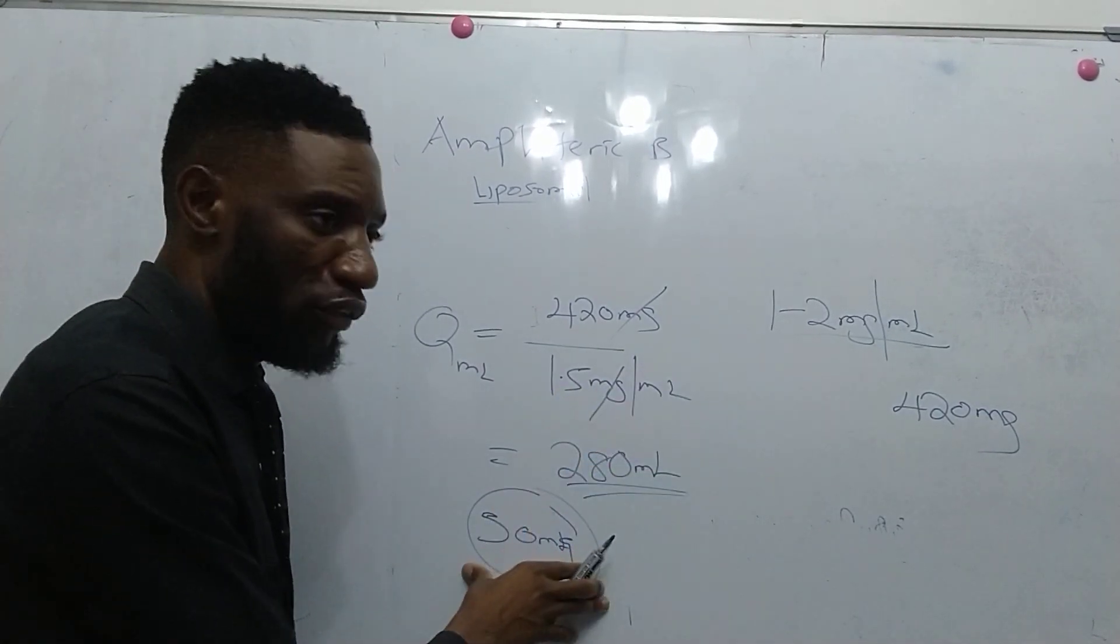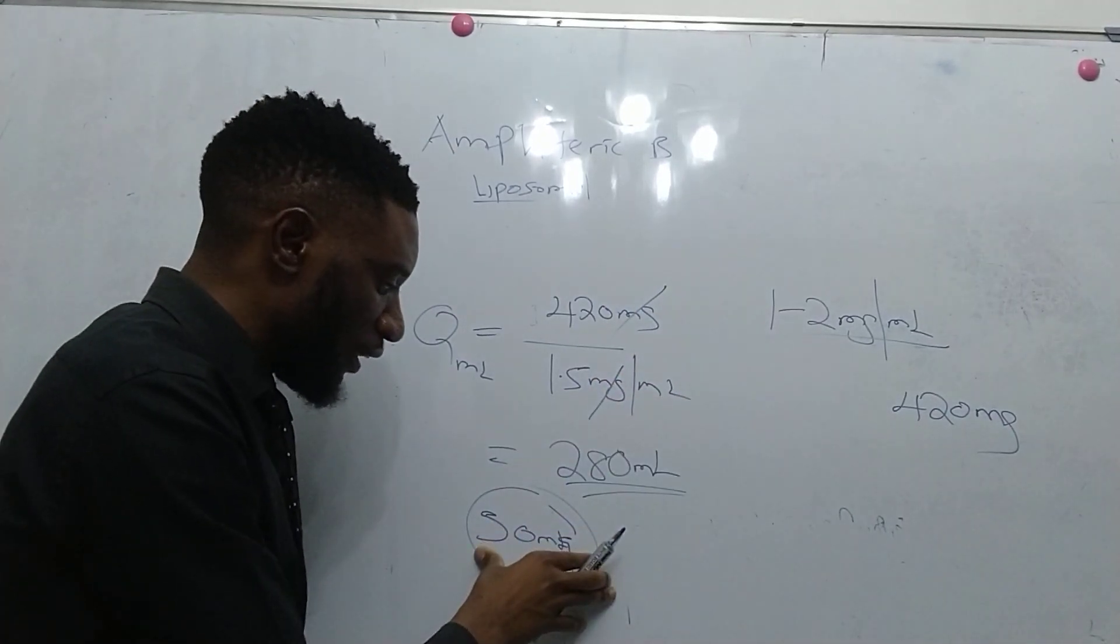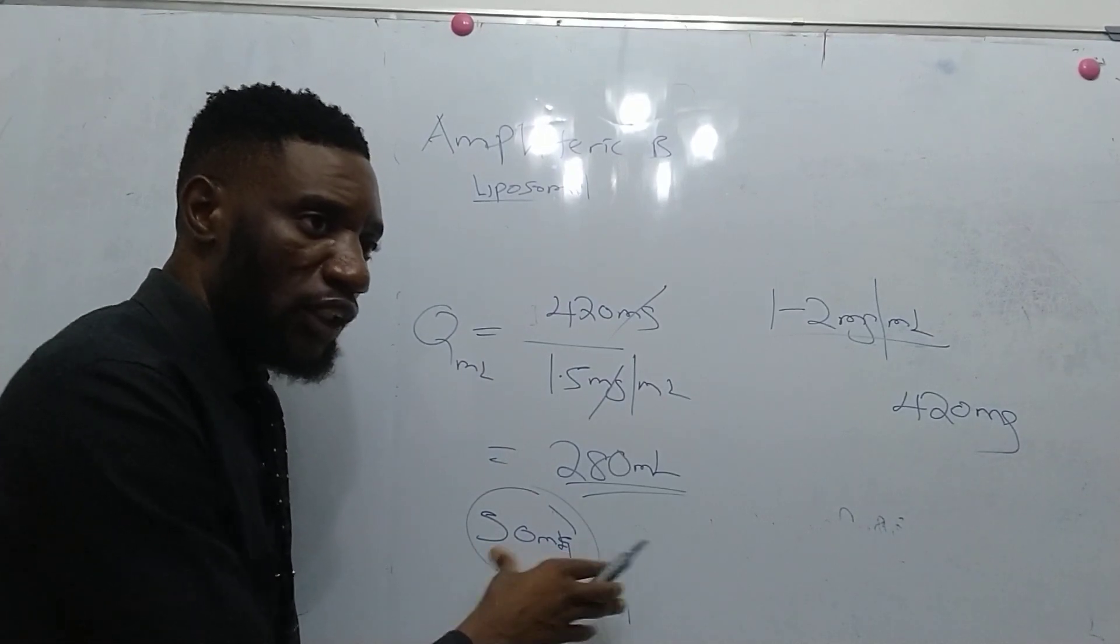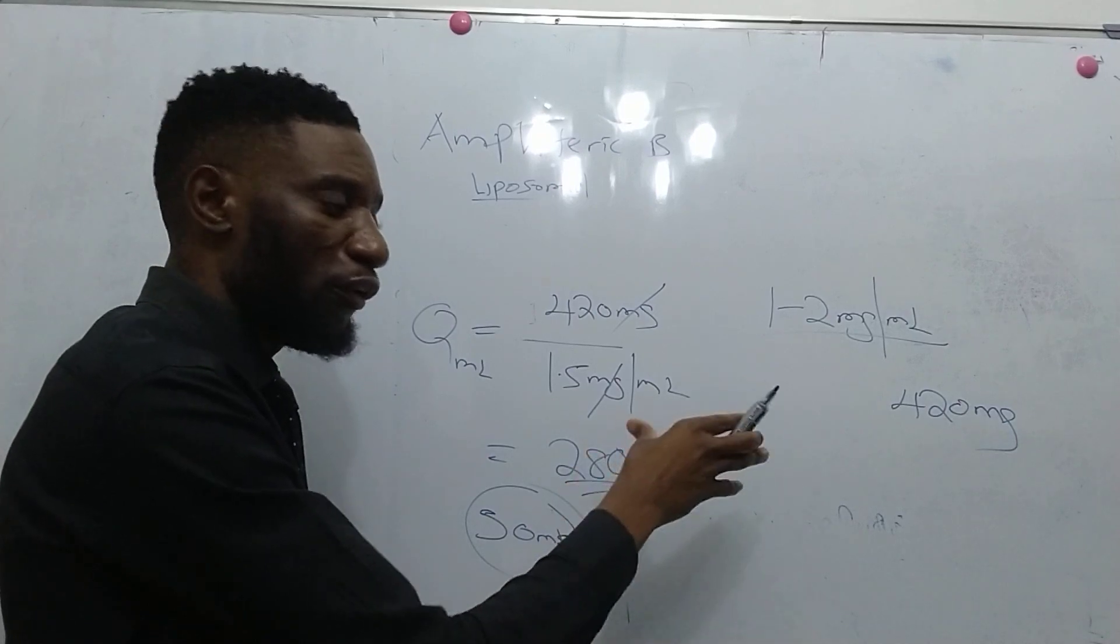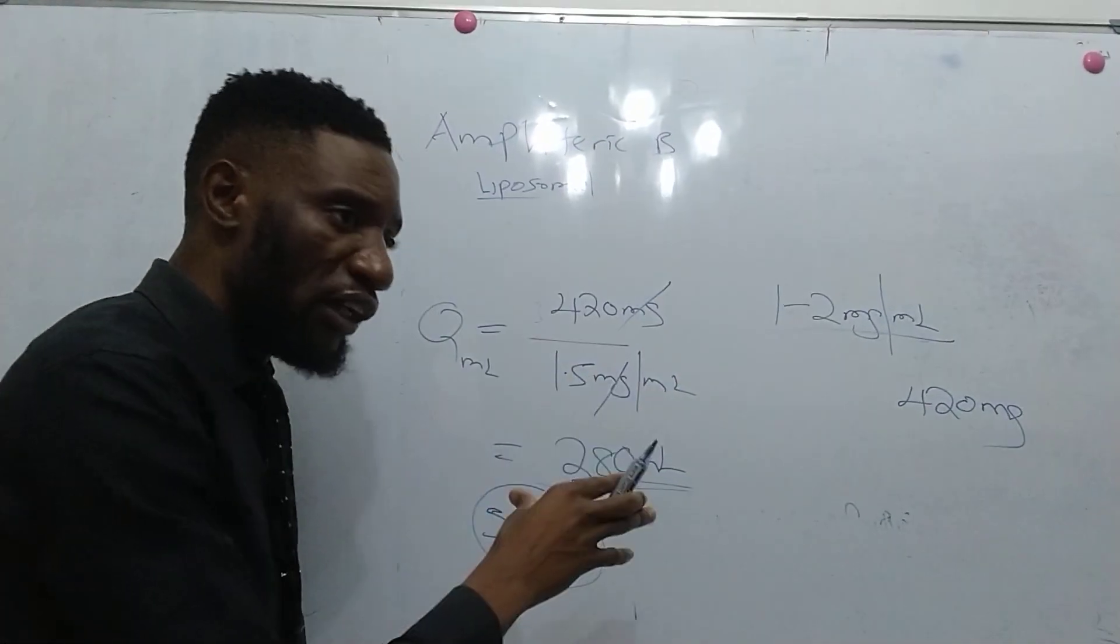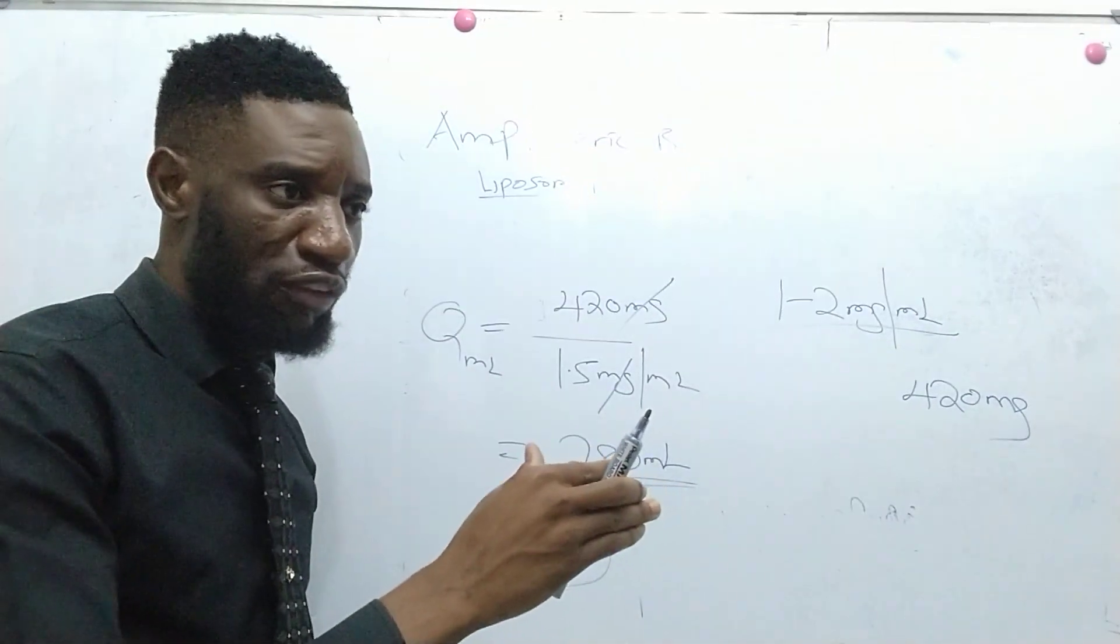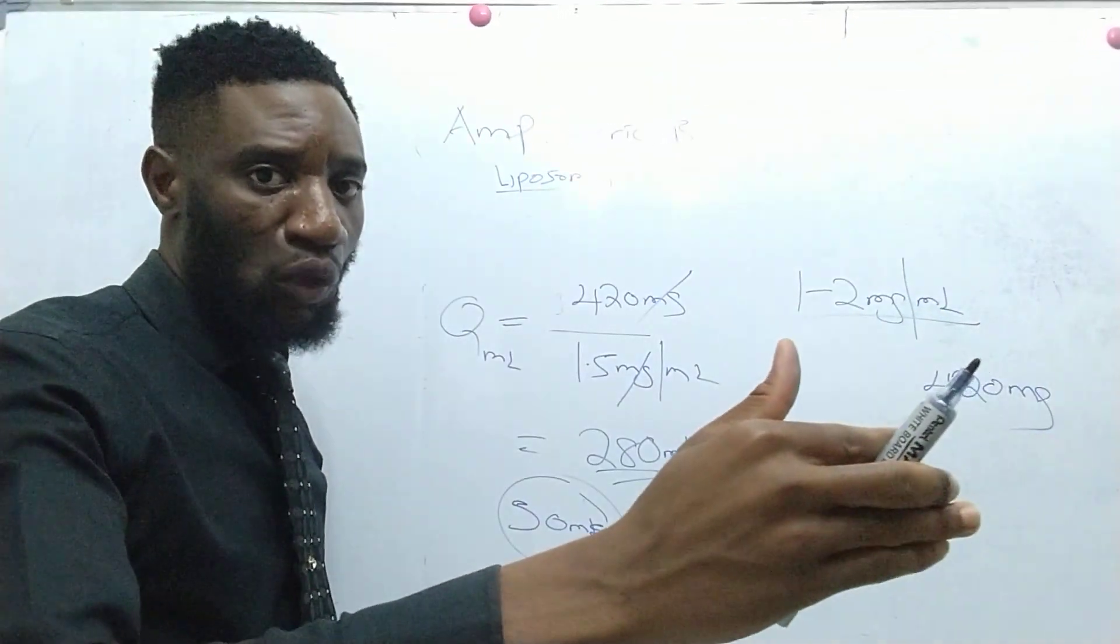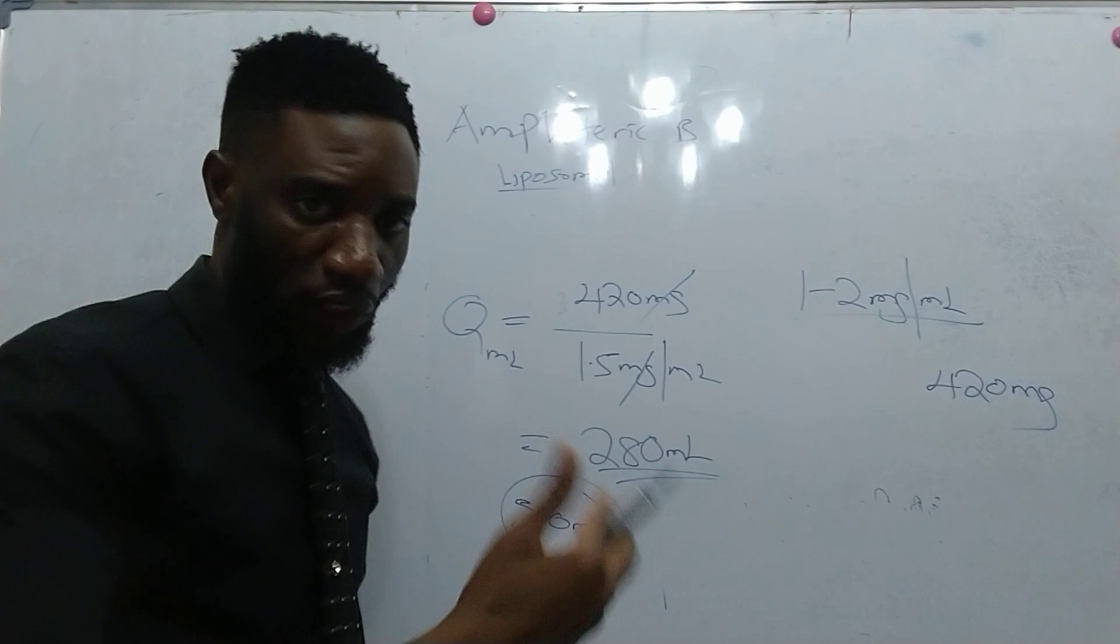After mixing the drug with 20 mL of water for injection, add that to 260 mL of dextrose to make a total volume of 280 mL. This should be administered over 1-2 hours as a constant infusion, depending on the patient's condition.